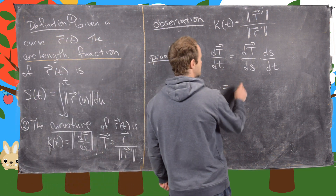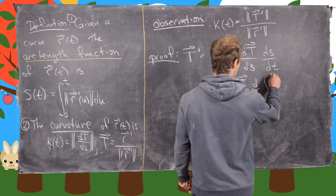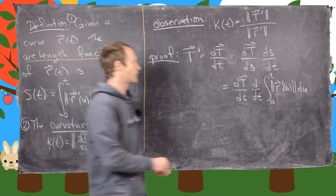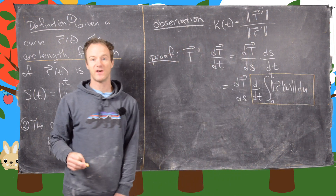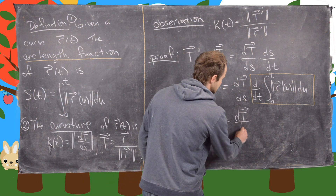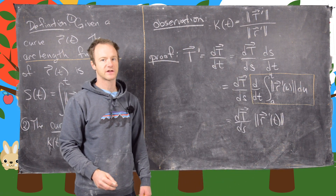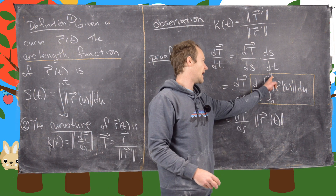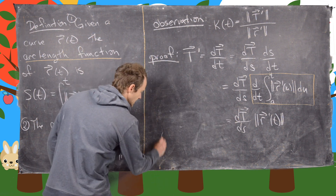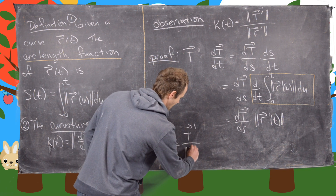Notice that this equals dT by ds times d by dt of the arc length function, which is the integral from a to t of the magnitude of r prime of u du. Zooming in on that part, we can use the fundamental theorem of calculus part two to take the derivative of the integral, and that gives us dT/ds times the magnitude of r prime of t. The fundamental theorem of calculus part two erases the integral and puts the upper bound into the dummy variable.